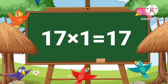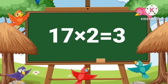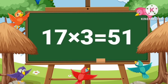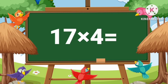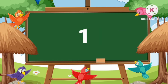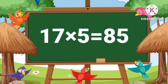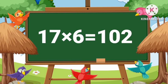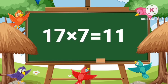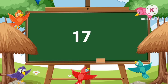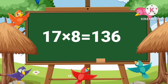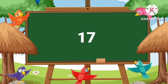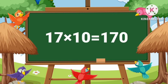Seventeen ones are seventeen. Seventeen twos are thirty-four. Seventeen threes are fifty-one. Seventeen fours are sixty-eight. Seventeen fives are eighty-five. Seventeen sixes are one hundred two. Seventeen sevens are one hundred nineteen. Seventeen eights are one hundred thirty-six. Seventeen nines are one hundred fifty-three. Seventeen tens are one hundred seventy.